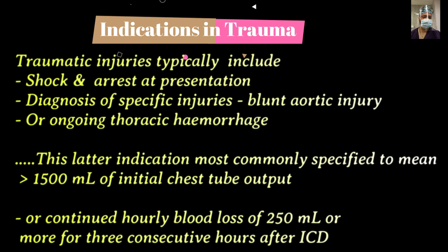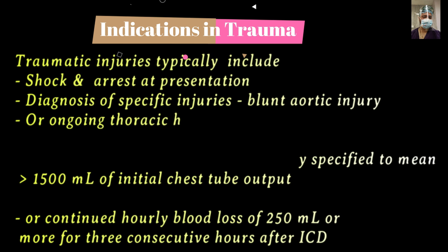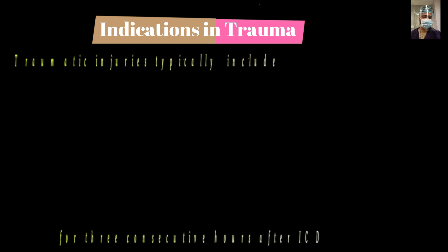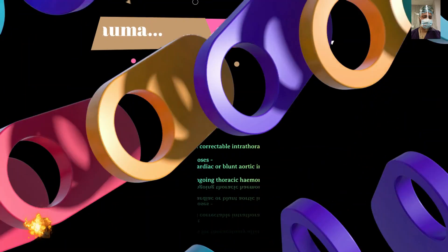Trainees often confuse the indication of ongoing thoracic hemorrhage. It means more than 1,500 ml of blood output after placing an ICD — that is, more than 1.5 liters of blood in the chest tube — or a persistent bleed of more than 250 ml per hour for three consecutive hours, which then becomes an indication for emergency thoracotomy.